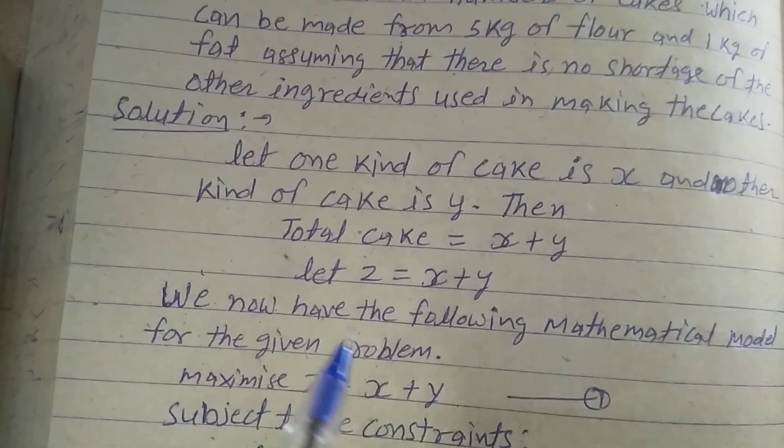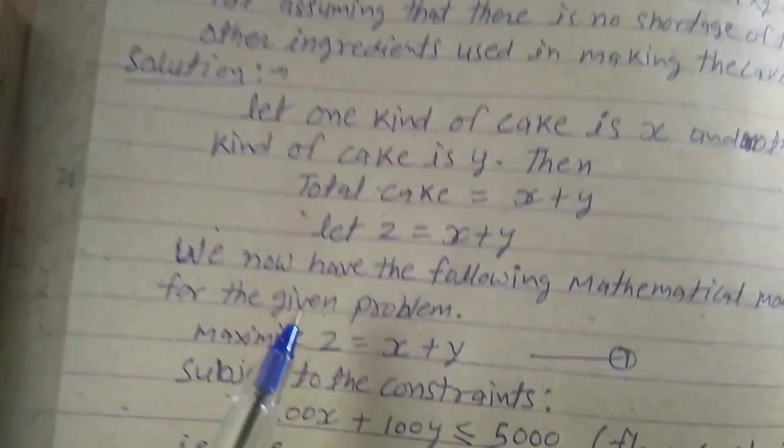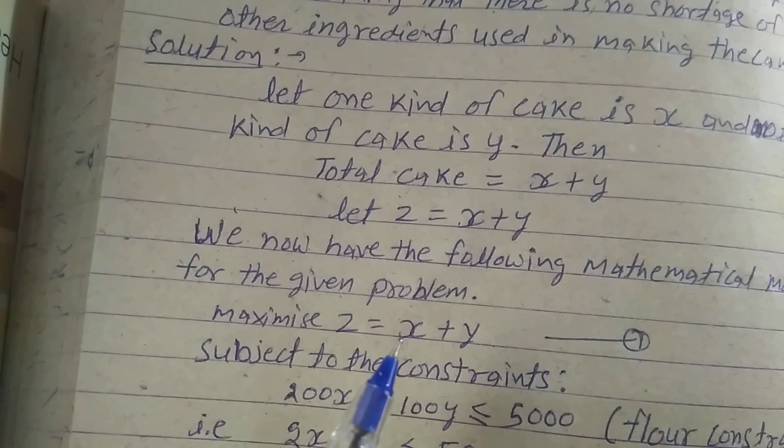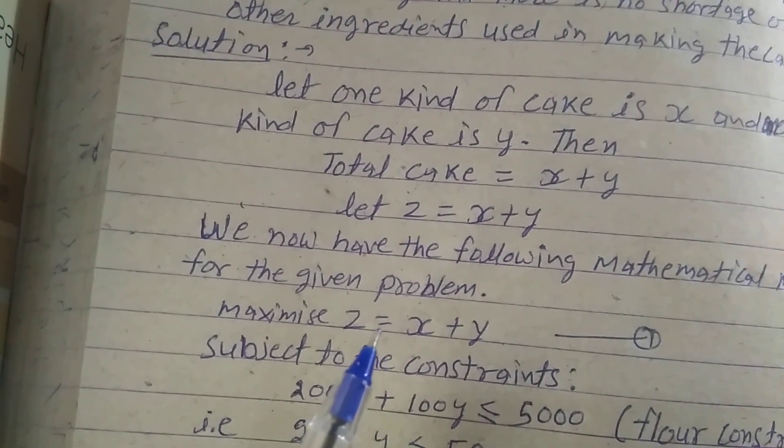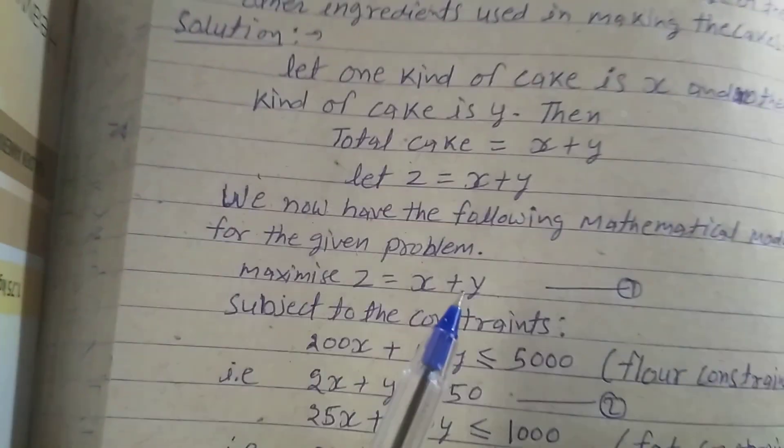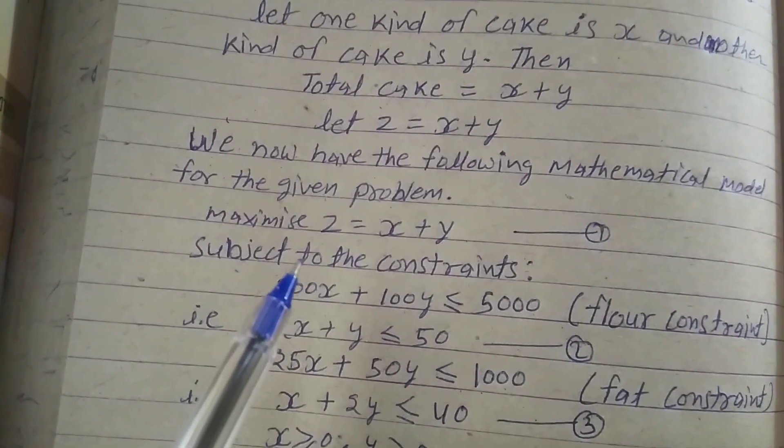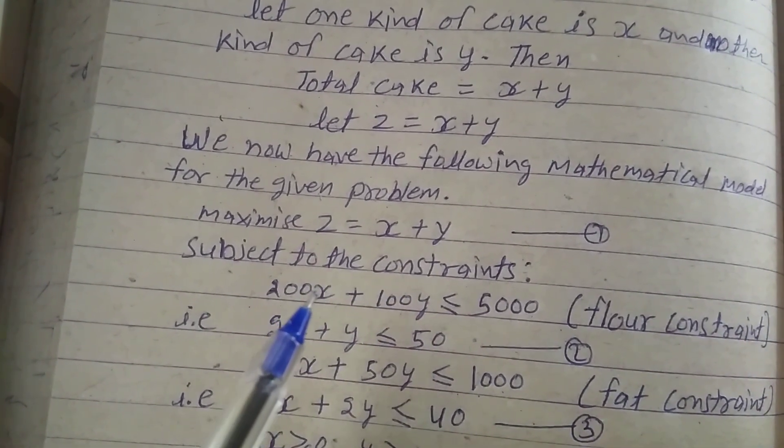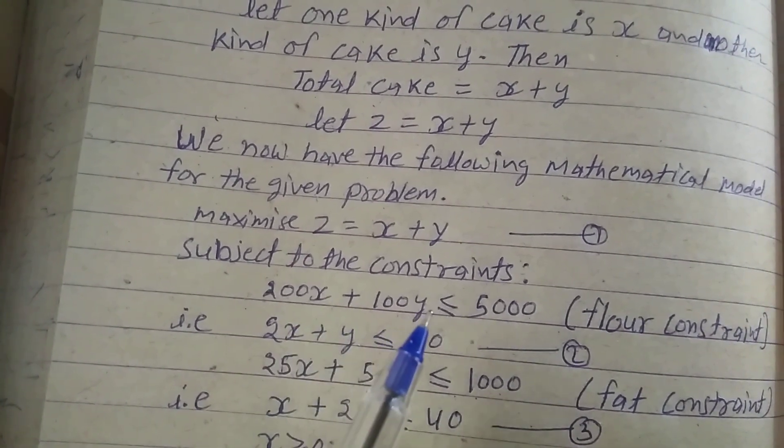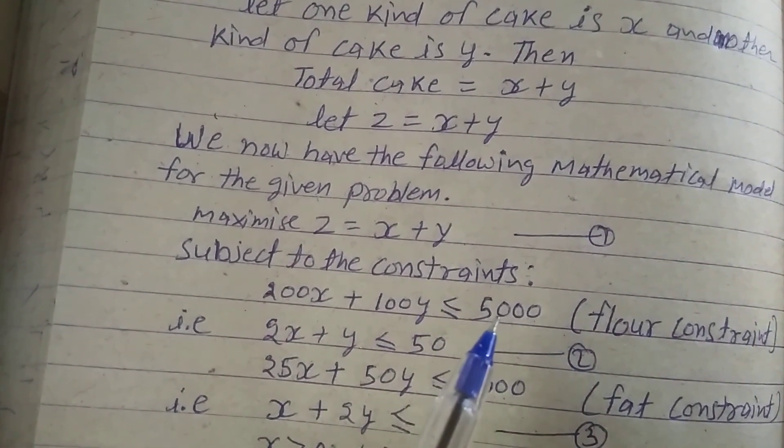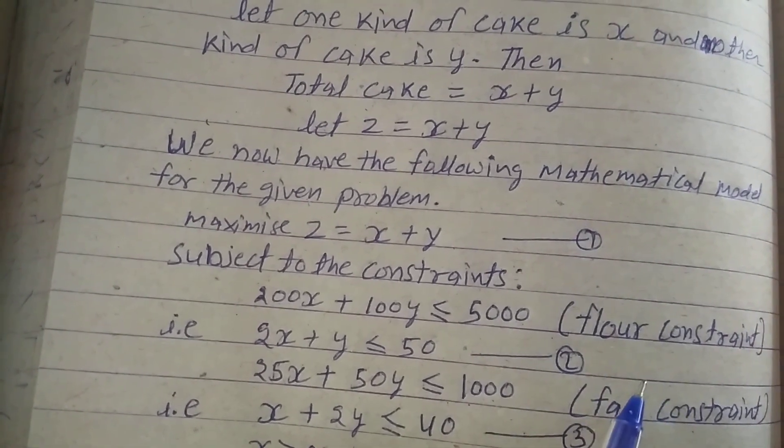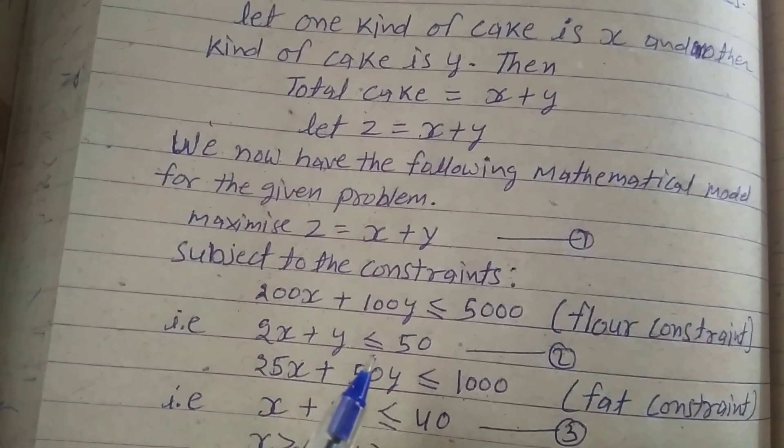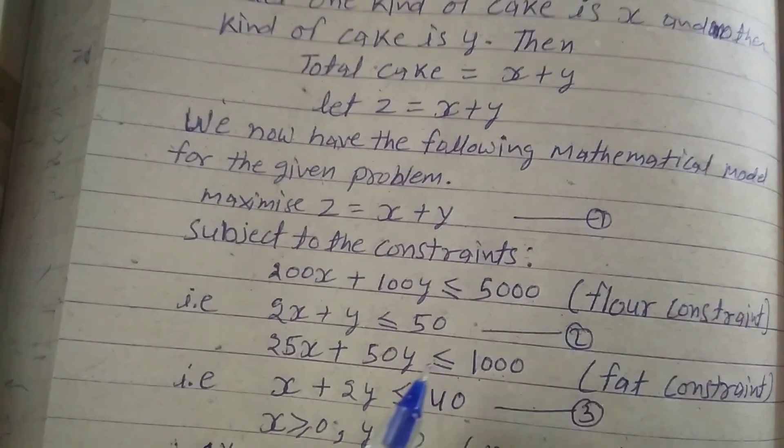We now have the following mathematical model of the given problem. Maximize z is equal to x plus y, because I want to find the maximum number of cakes. Maximize z equals x plus y, equation first. Subject to the constraints: 200x plus 100y is less than or equal to 5000, means flour constraint. That is 2x plus y is less than or equal to 50, equation 2.